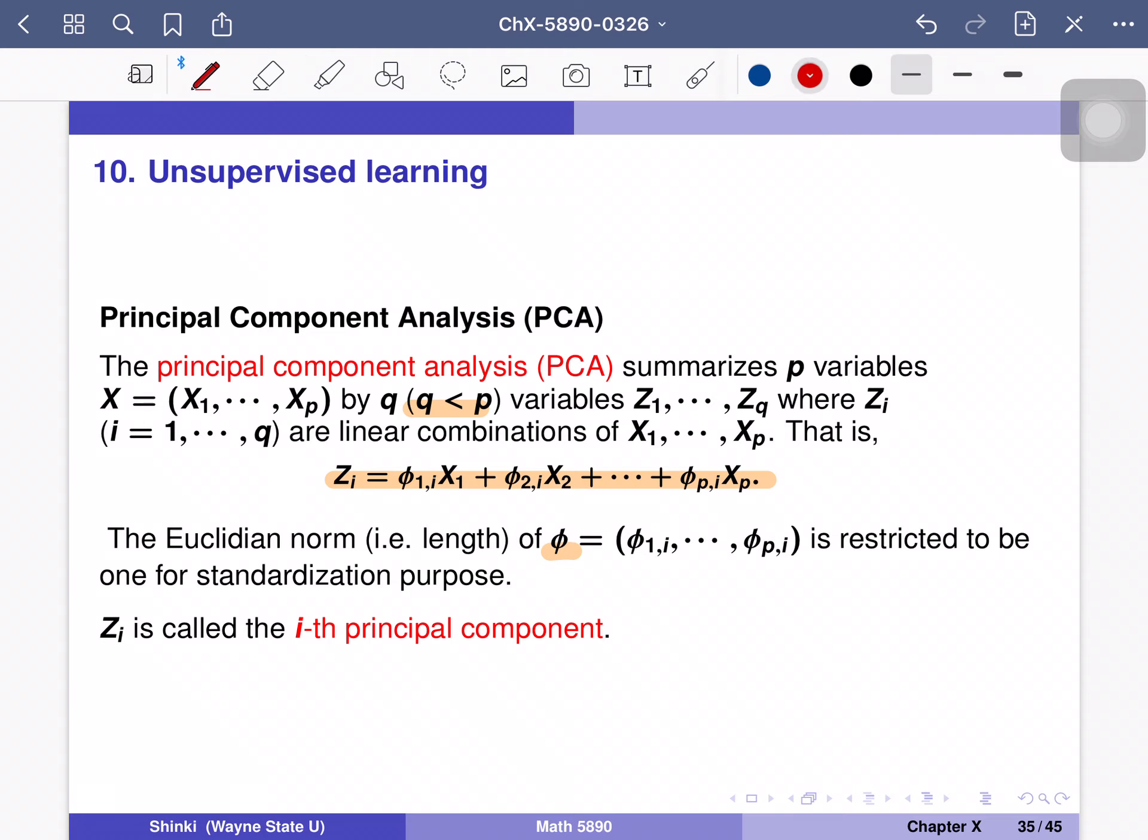So zi is called the i-th principal component. The idea is that z1 includes most important information, and z2 includes the second most important information, and so on.